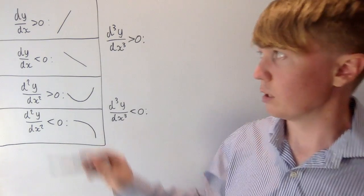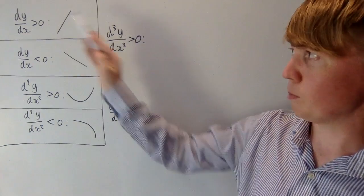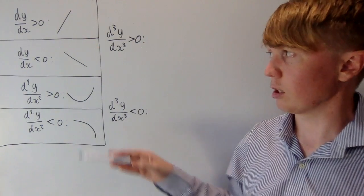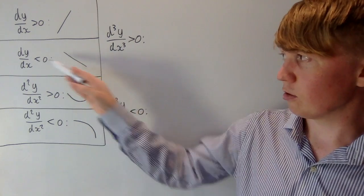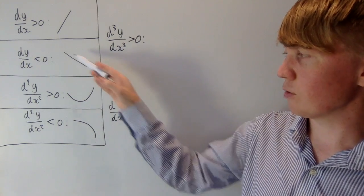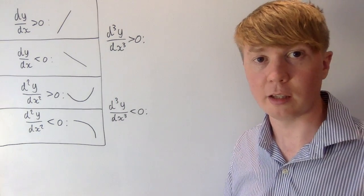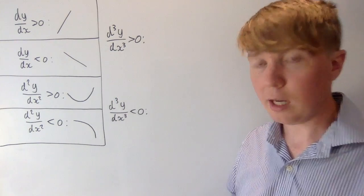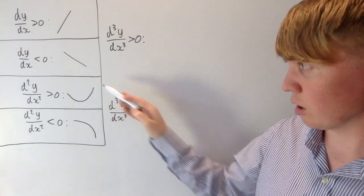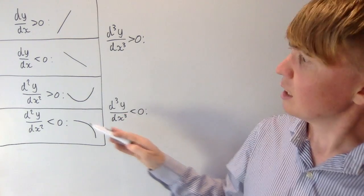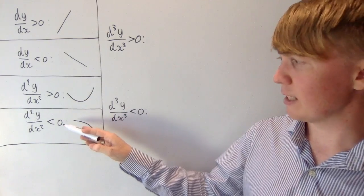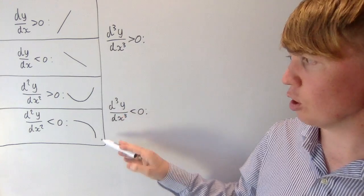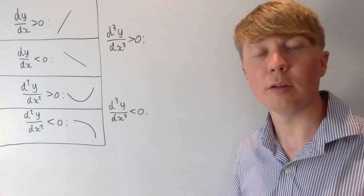If the first derivative of a function, dy/dx, is positive, then our function is increasing at a point. If the first derivative is negative somewhere, then our function is decreasing there. If the second derivative is positive, our function is convex, and if the second derivative is negative, our function is concave. This describes the curvature of our function.